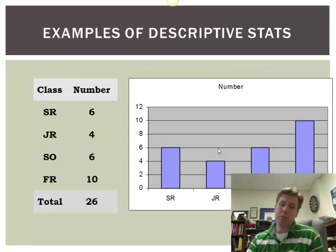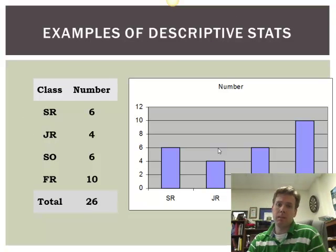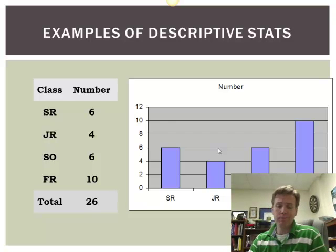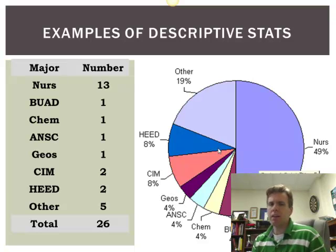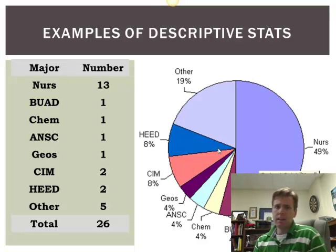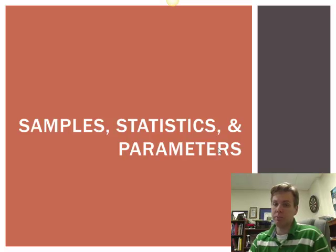Probably what you're most familiar with. Here's an example — the class breakdown I had in semesters past: number of freshmen, sophomores, juniors, and seniors. We see a table on the left, and on the right we see a bar chart. Here's an example of a pie chart. I'm going to show you how to make all these in Excel, StatCrunch, or Minitab. The TI can do many of these but it doesn't look too good, so we'll stick with Excel, Minitab, and StatCrunch for descriptive statistics.